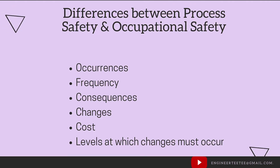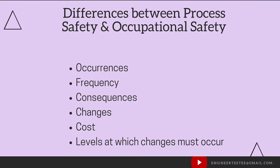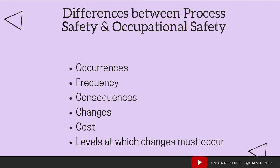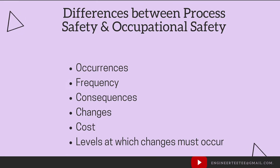Process safety protects workers and the public alike, as well as equipment on your chemical plant, whilst occupational safety focuses on the workers. Process safety considers the consequences of accidents at a personal, environmental, equipment, and business level, whilst occupational safety focuses on consequences at the human level only.